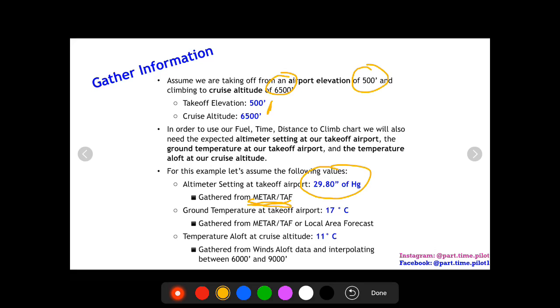Look at their TAF and find that altimeter setting if you need to look in the future. Otherwise do it the morning of, but obviously we want to do this probably a little bit since it takes a while. For ground temperature, let's assume 17 degrees Celsius. You can get this from again a METAR, TAF, or the local area forecast.